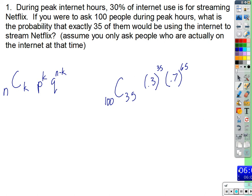So the formula gives us: 100C35 × 0.3^35 × 0.7^65. It's pretty likely that they won't be using the internet for Netflix, but it's still astonishing that at peak hours — when people get home from work and after dinner — 30% of all internet usage supports Netflix. The result is 0.047.